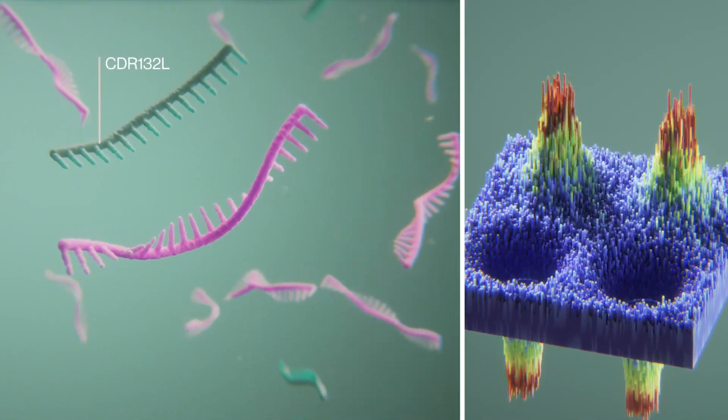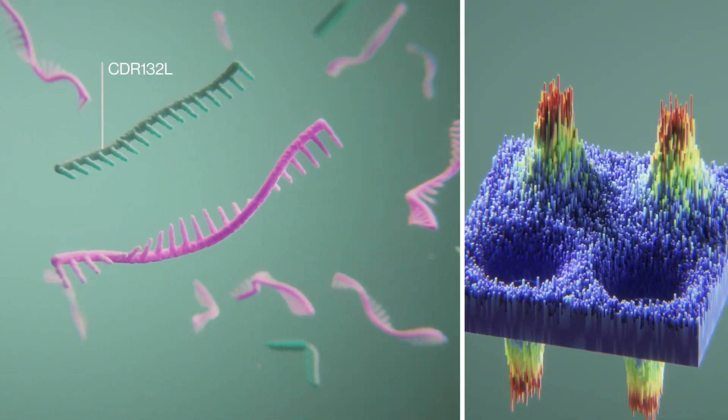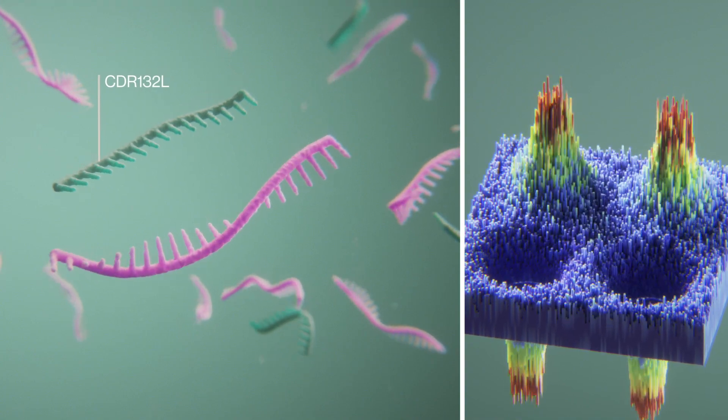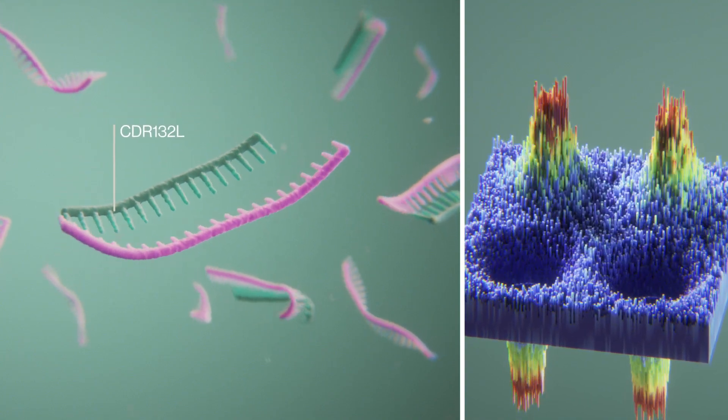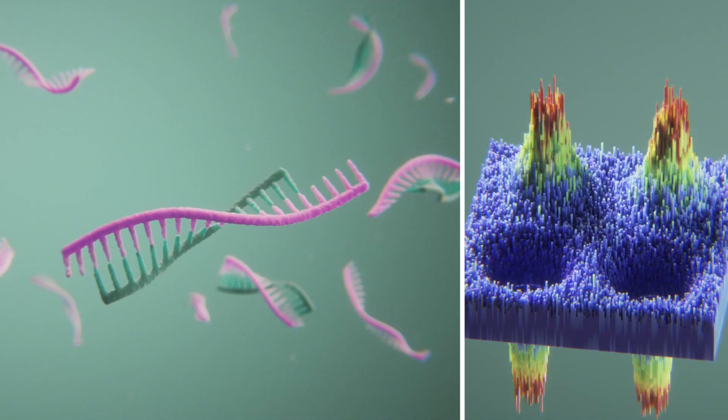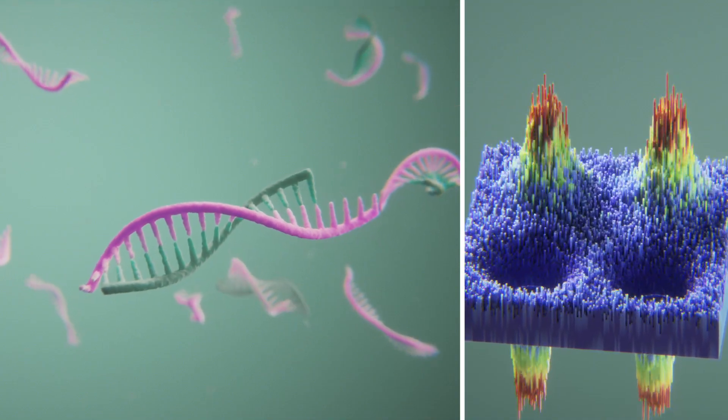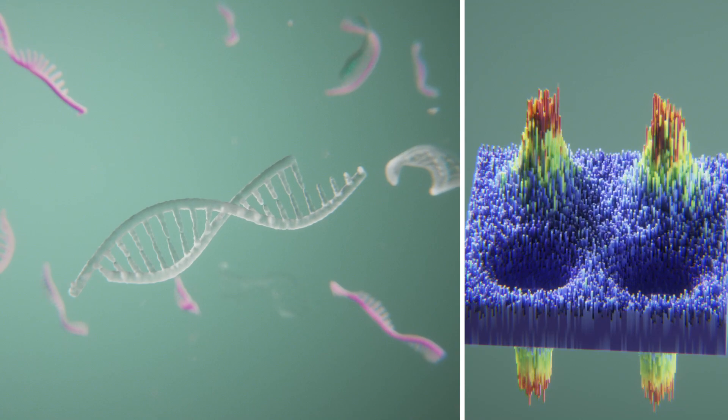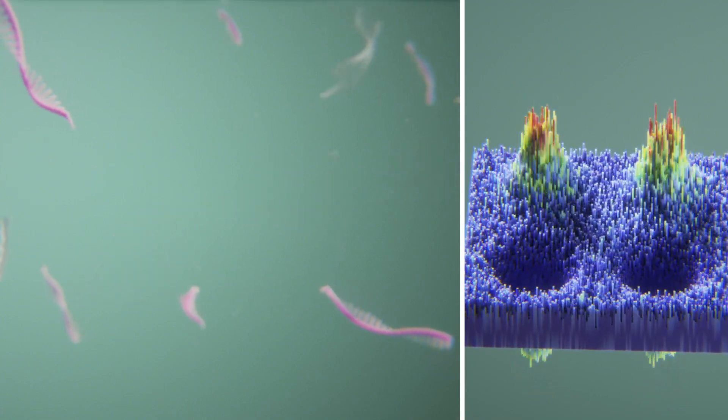CDR-132L is a highly stable, water-soluble oligonucleotide designed to target excessive levels of microRNA-132. Treatment with CDR-132L gradually leads to the reversal of pathologically modulated signaling pathways.